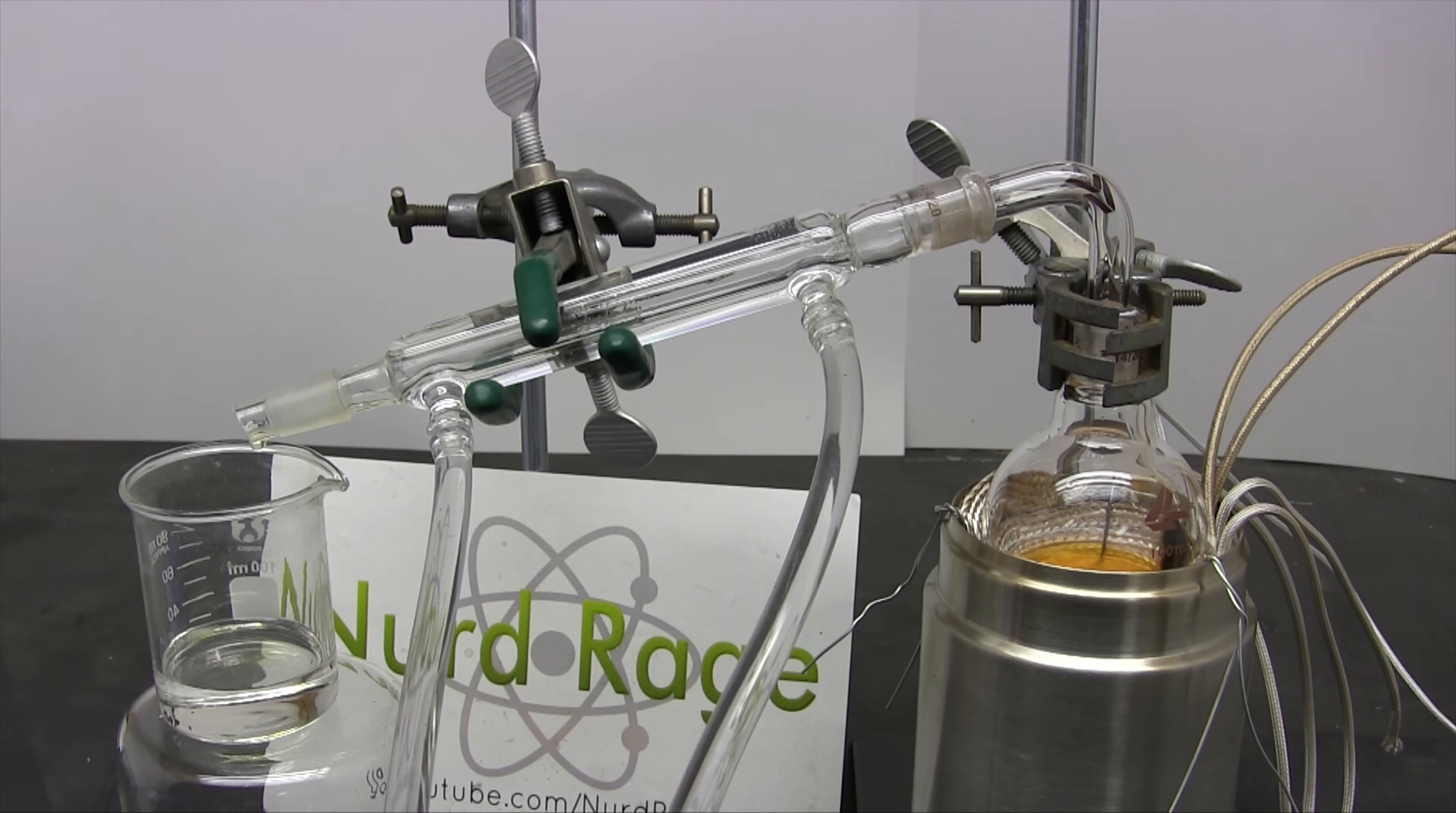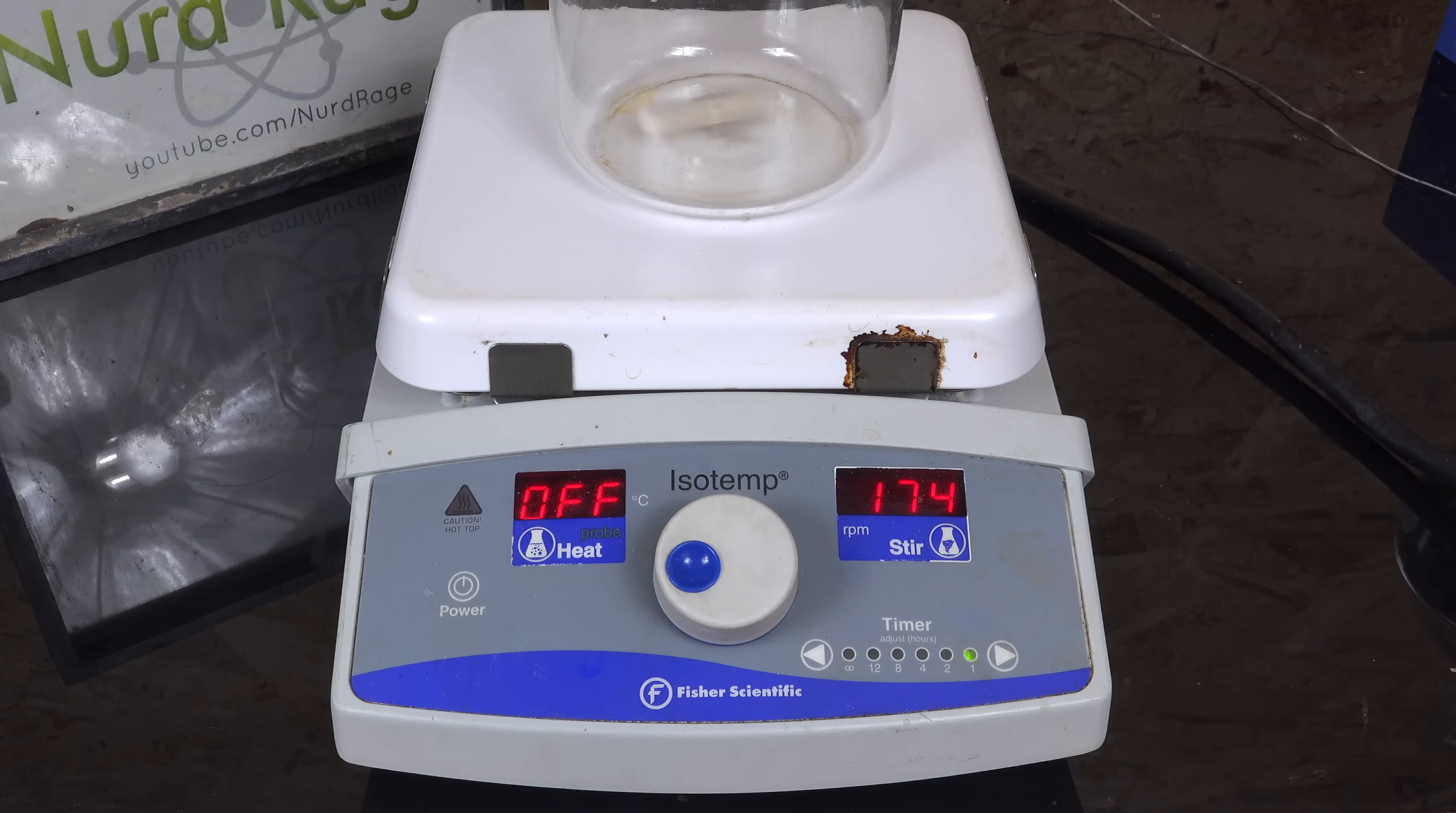Another problem with the mantle is that there is no stirring and so bumping and splattering was a problem even with boiling chips. But stirring practically eliminates bumping. This ceramic hot plate stirrer does both.